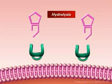Ultimately, the destruction of the beta-lactam ring of the antibiotic renders it incapable of binding to the penicillin-binding protein, and thus, the bacteria become resistant to that drug or class of drugs.